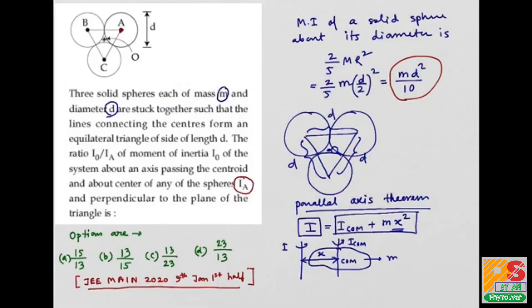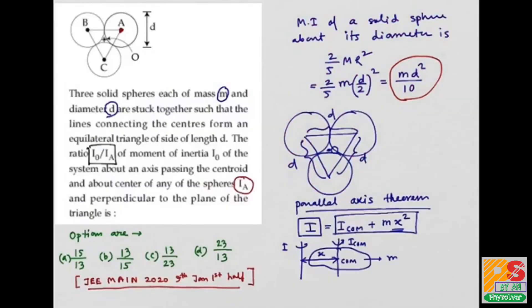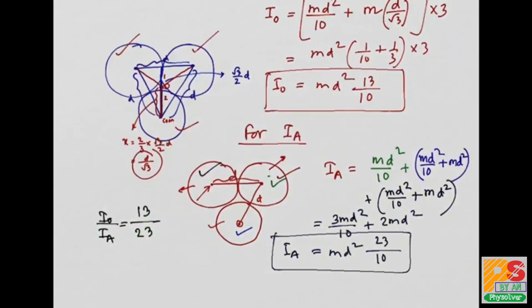Look at the question, they want I_O divided by I_A. So I_O divided by I_A is equal to 13 divided by 23. Look at the option. Option C is correct. Thank you for watching this video. Please subscribe my channel, Phi Solver.